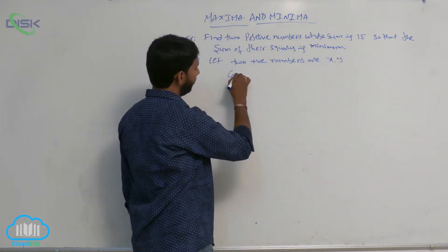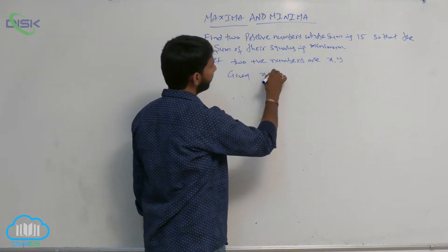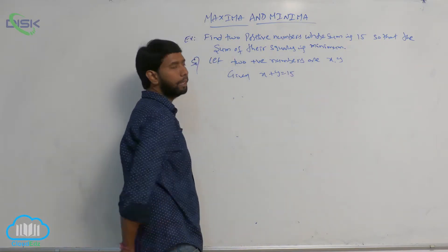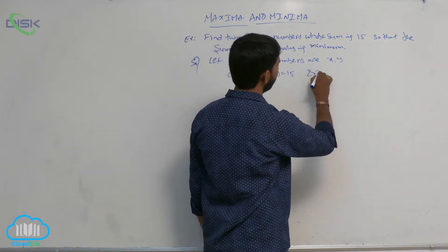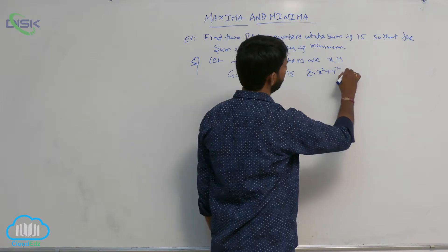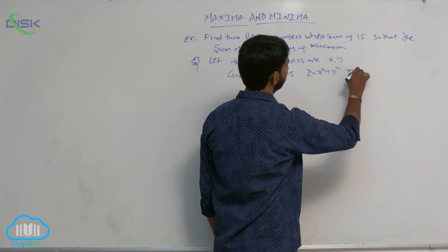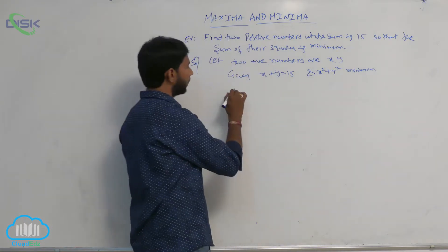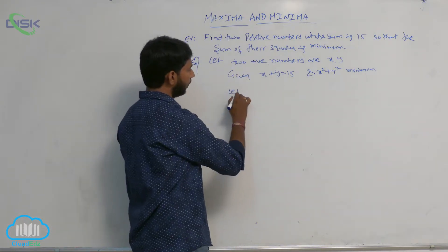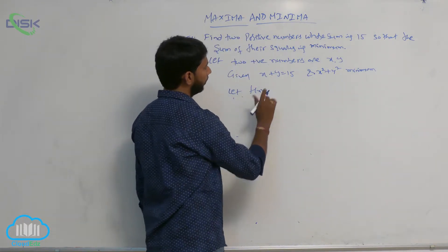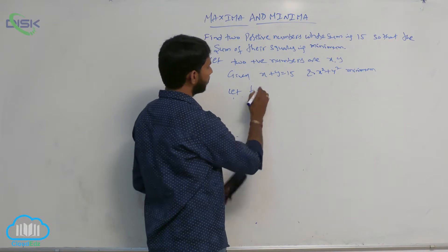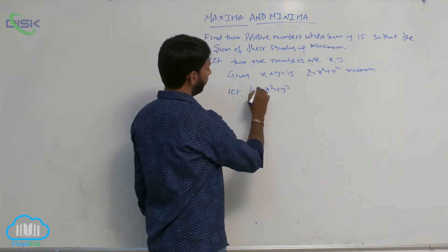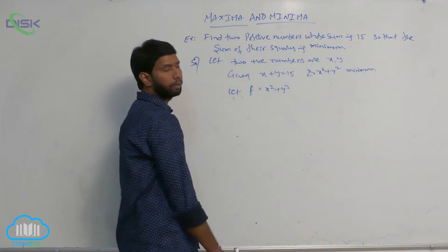The given condition is x plus y is equal to 15, and the sum of their squares, that is x squared plus y squared, is minimum. Let f be equal to x squared plus y squared.